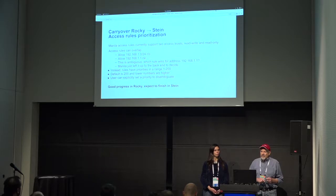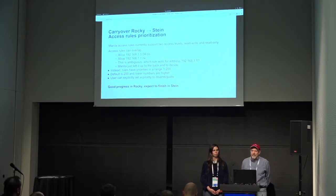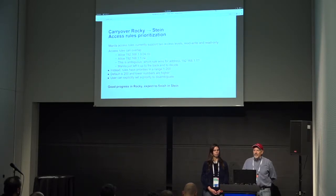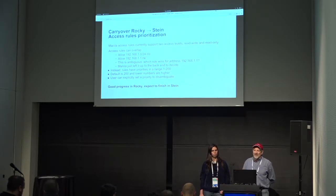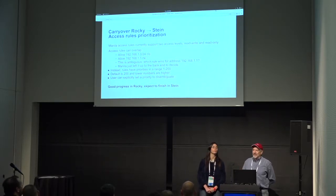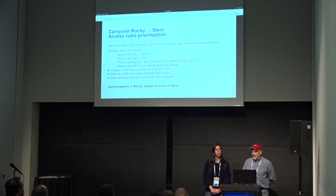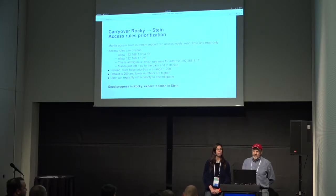Another carryover is access rule prioritization. Manila currently has an ambiguity with access rules in that you can have overlapping rules and it's ambiguous which one will win. It's intuitive to me that the more specific rule should win, but other people want to be able to override the more specific rule with one that comes first and takes priority, so they can unmask it later. Different backends did it in different ways. We decided to allow users to put a priority on these access rules and decide for themselves. There was good progress on it in Rocky and it's still continuing — it has an owner and I expect it will get done this cycle.